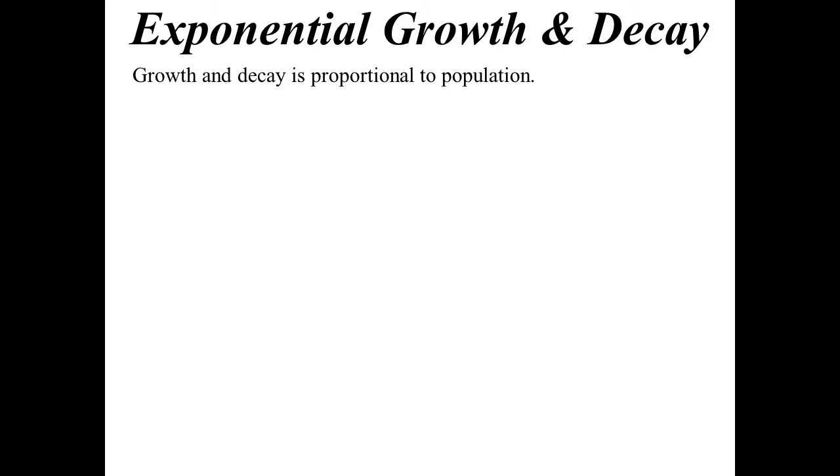Growth and decay is proportional to the population that you have. I mean the more people you have, then the more people that are going to die, the more people that are going to be born. That's the idea. So we could say that the rate of change of population with respect to time then is equal to some constant and would be directly proportional to the population.